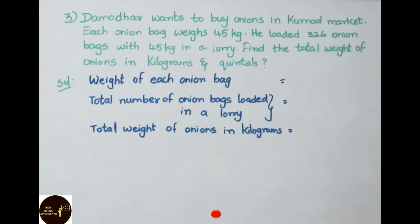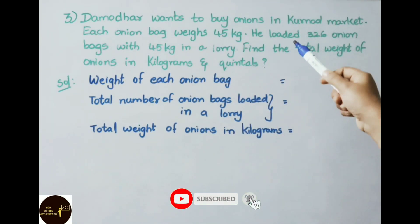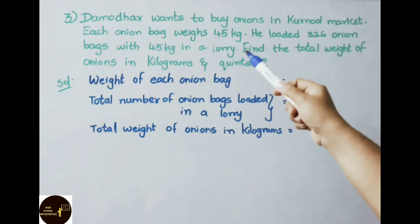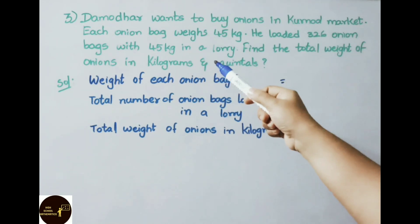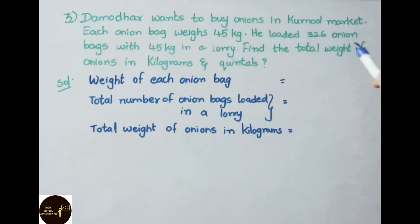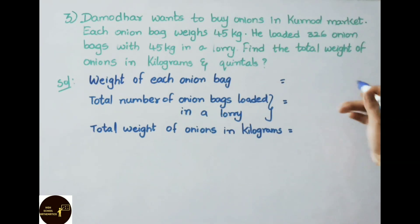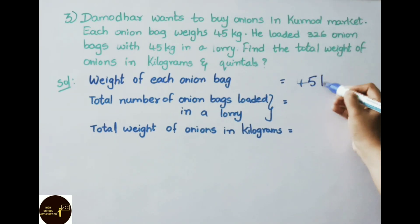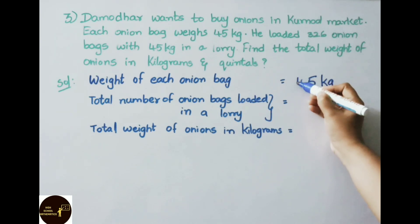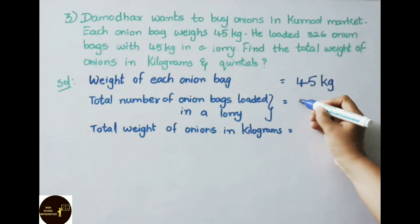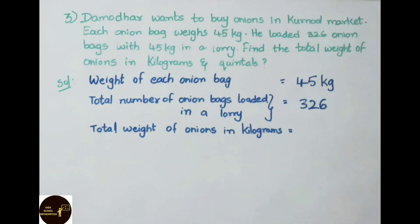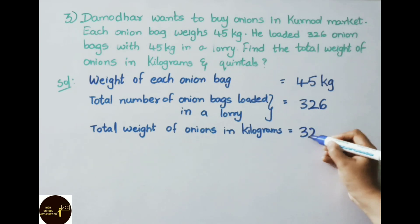Let us see the third sum. Dhamudhar wants to buy onions in Karnul market. Each onion bag weighs 45 kg. He loaded 326 onion bags in a lorry. Find the total weight of onions in kilograms and quintals. Weight of each onion bag is 45 kg. Total number of onion bags loaded in a lorry is 326 bags. Now we need to find the total weight of onions in kilograms.